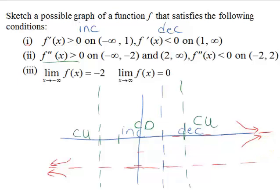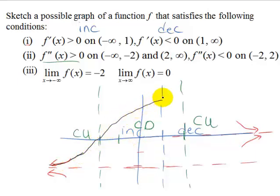Now that we have all of those pieces, let's put this all together. We're going to be out towards negative infinity at negative 2, so I'll draw it here concave up. When we hit this line, we need to change to concave down, but we are still increasing. As we hit the change at x equals 1, this is where it changes from increasing to decreasing, but it's still concave down. Then as I hit x equals 2, still decreasing the rest of the way, I change to concave up and head towards the asymptote at 0.